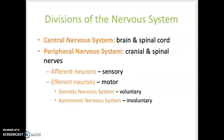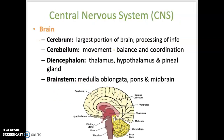There are 12 pairs of cranial nerves that extend out of the base of the brain and 31 pairs of spinal nerves that extend out of the spinal cord. Within the peripheral nervous system there are further divisions: afferent and efferent, as discussed earlier.